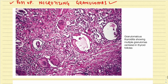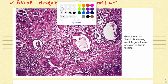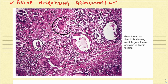Looking at this classical diagram, you can appreciate multiple multinucleate giant cells with lymphocytic infiltration and released colloid material, demonstrating multiple granulomas centered in thyroid follicles.